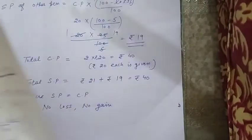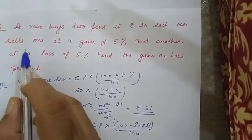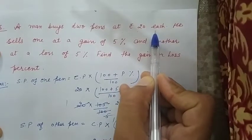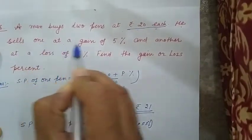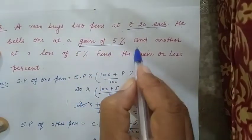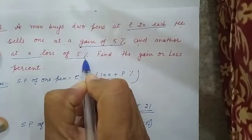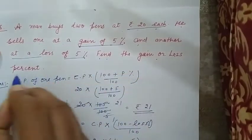Right? Aisye hi question number 6, a man buys two pens at rupees 20 each. Eek person nye 2 pens, 20 rupiz per pen ke hisaab se kharii day. He sells one at a gain of 5%. Uusne ne eek pen 5% gain per beseja, profit per beseja. And another at a loss of 5%. And another at a loss of 5% loss per beseja. Find the gain or loss percent.